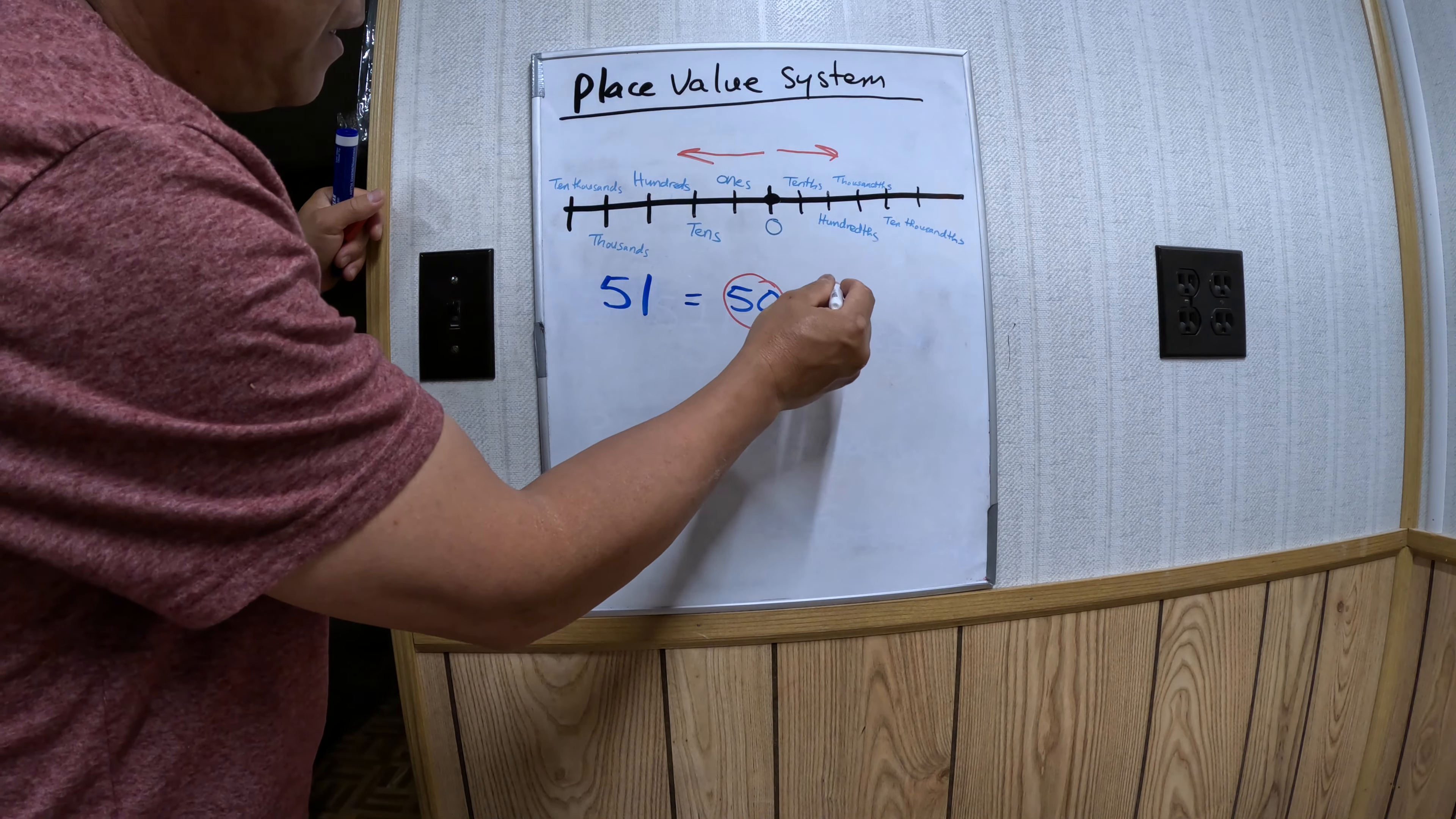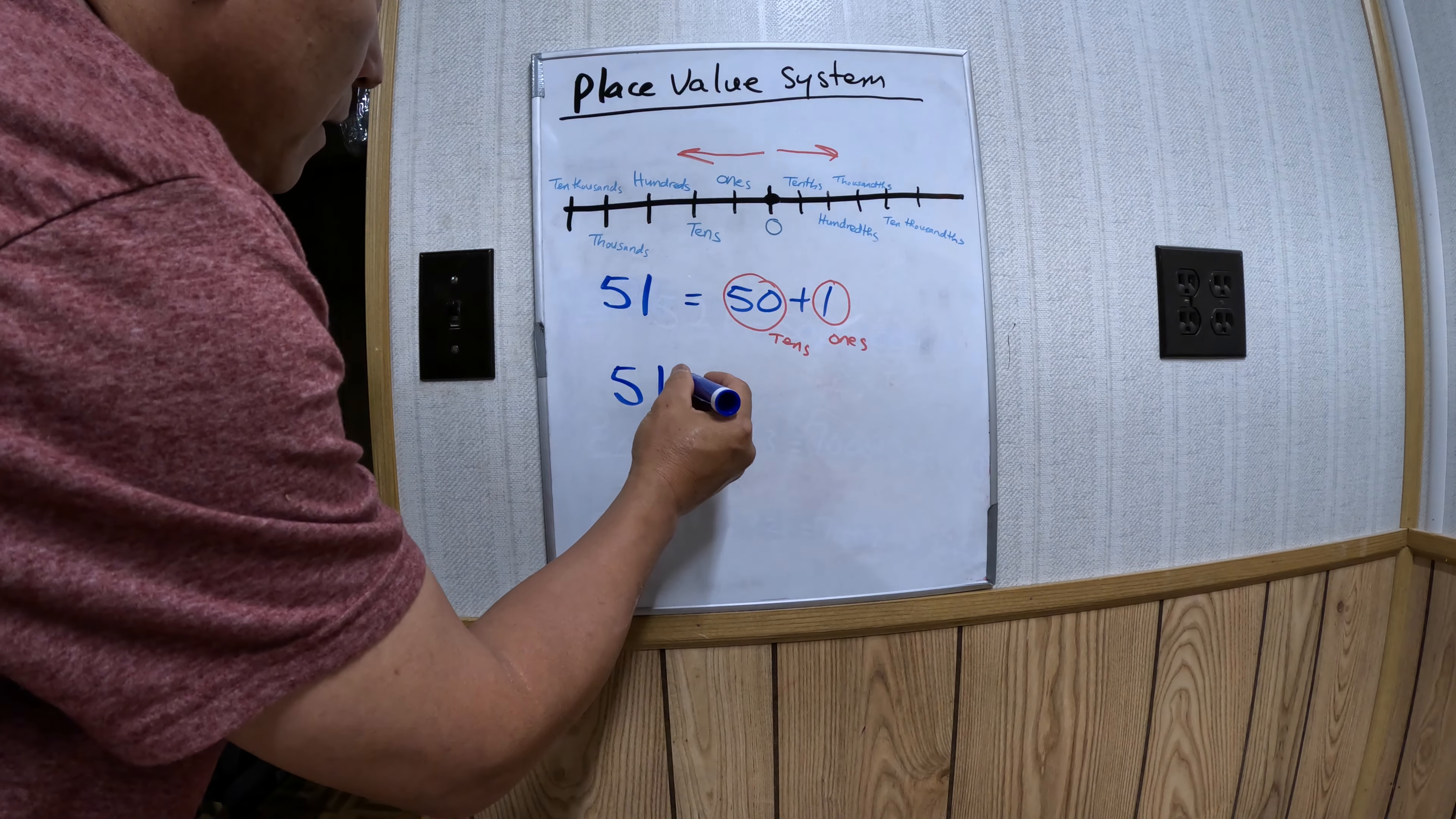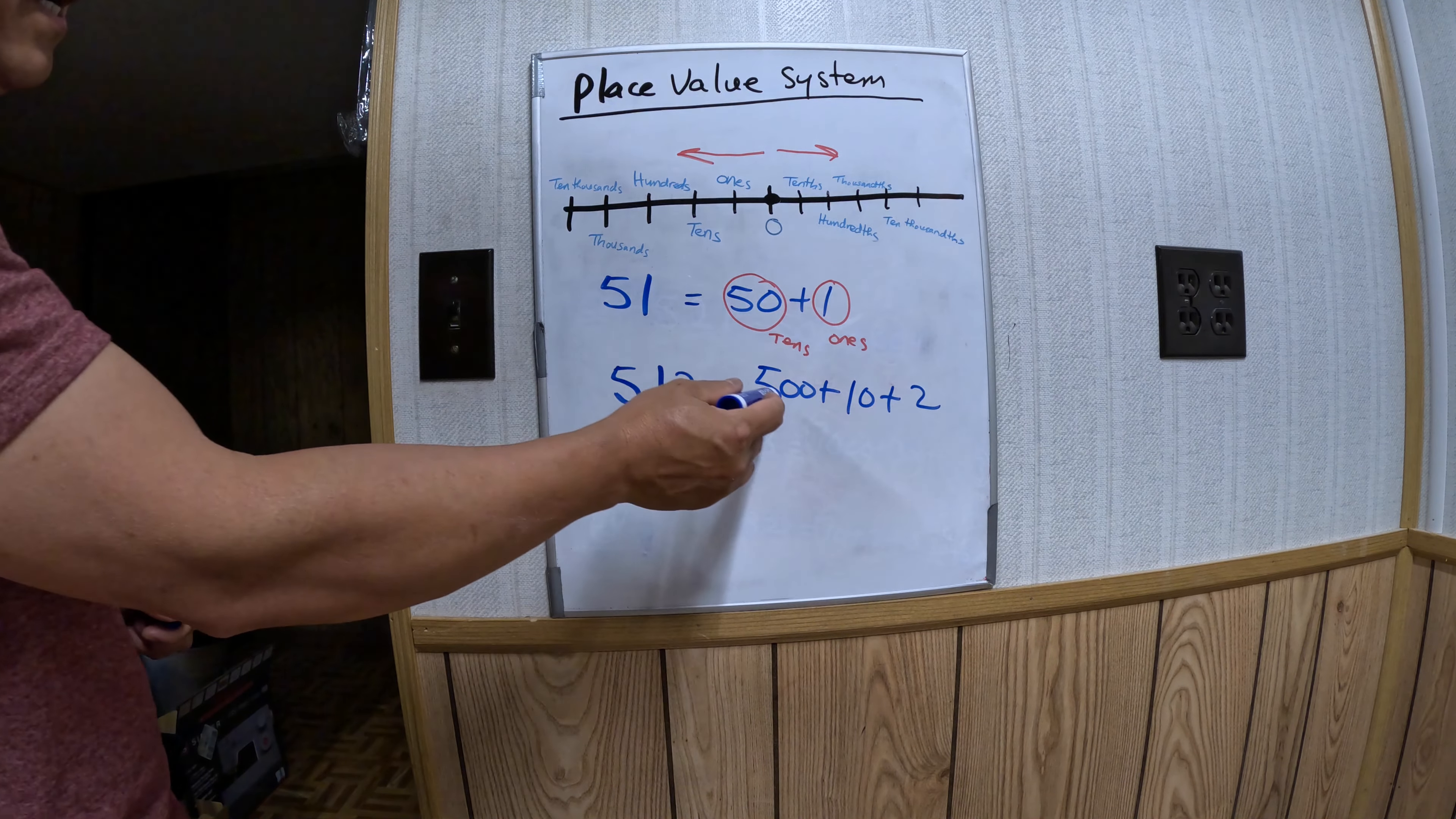Another example: if you have 512, what does that mean? It means 500 plus 10 plus 2. So 500 plus 10 plus 2 equals 512.